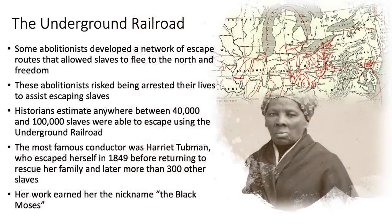Some abolitionists went beyond speaking and developed networks of escape routes allowing slaves to flee to the North and freedom — the Underground Railroad. Abolitionists risked arrest and their lives to assist escaping slaves to reach Canada and the North. Historians estimate anywhere between 40,000 and 100,000 slaves used the series of safe houses to journey to safety. The most famous conductor was Harriet Tubman, who escaped herself in 1849 before returning to rescue her family and later helping more than 300 other slaves escape, earning her the nickname The Black Moses.